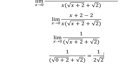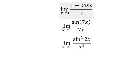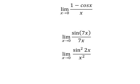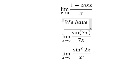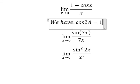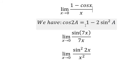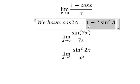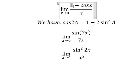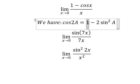Question number three: we have the formula cosine 2x equals 1 minus 2 sine squared x. We need to use this formula because we have the number one here, and we need to subtract one so that we can apply another formula.